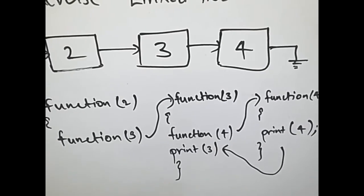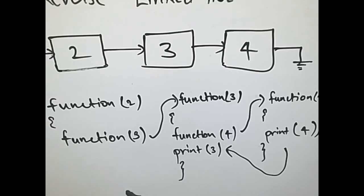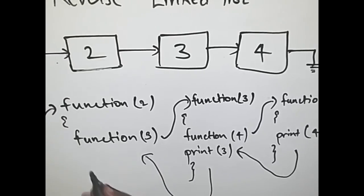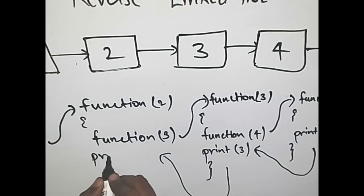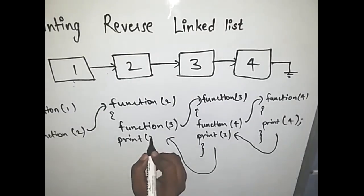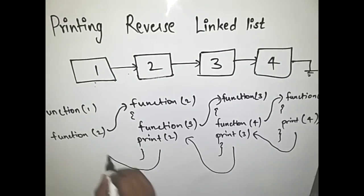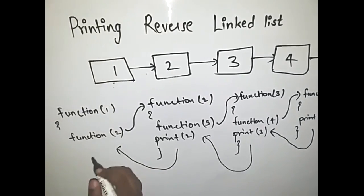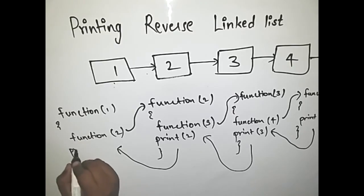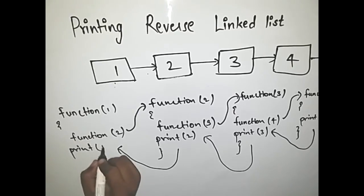Now this function ends and then it goes to the function that actually called it. So this comes here and it executes the remaining of this function. So we print 2 here. This ends this function and we go into the function that called it and execute the remaining of this function and we print 1 here.